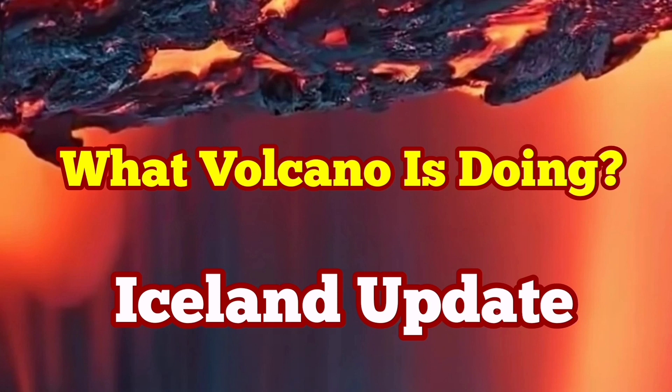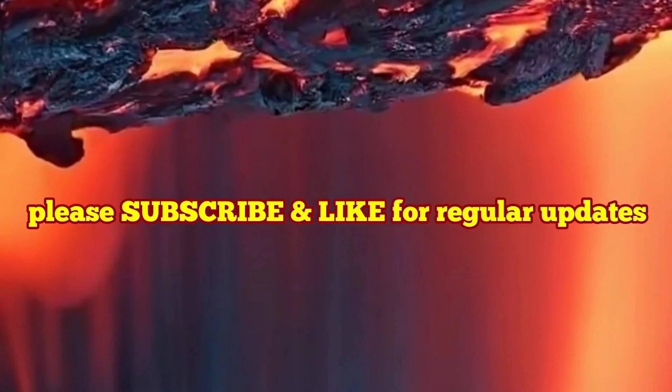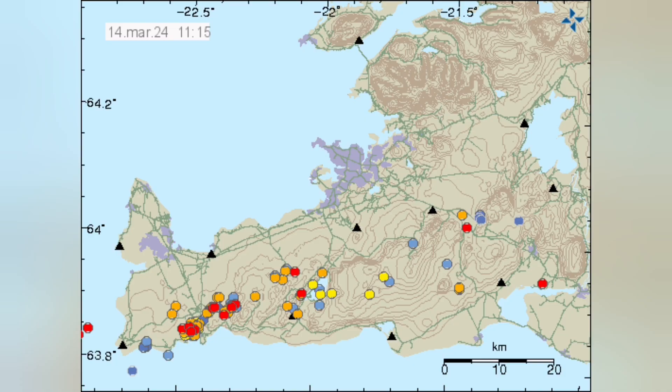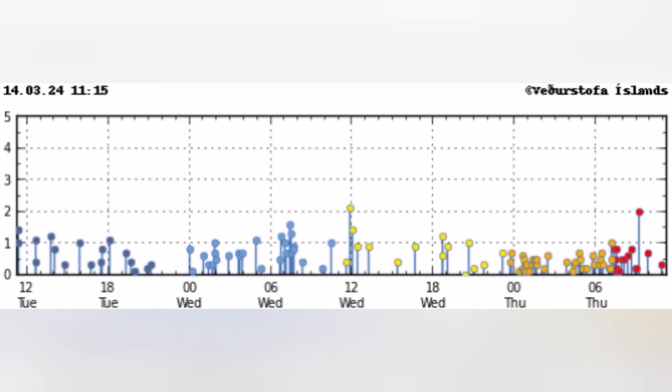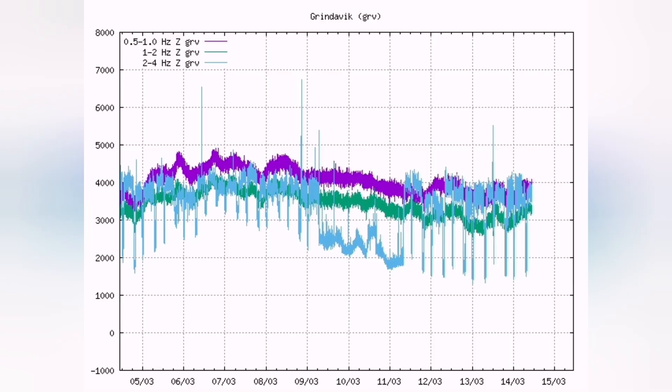It's becoming a norm for the Svartang volcanic system in Iceland's Reykjanes Peninsula to show us a flurry of earthquakes at different scales. Many of them are small, and then nothing happens. We don't see anything in the sense of eruption.